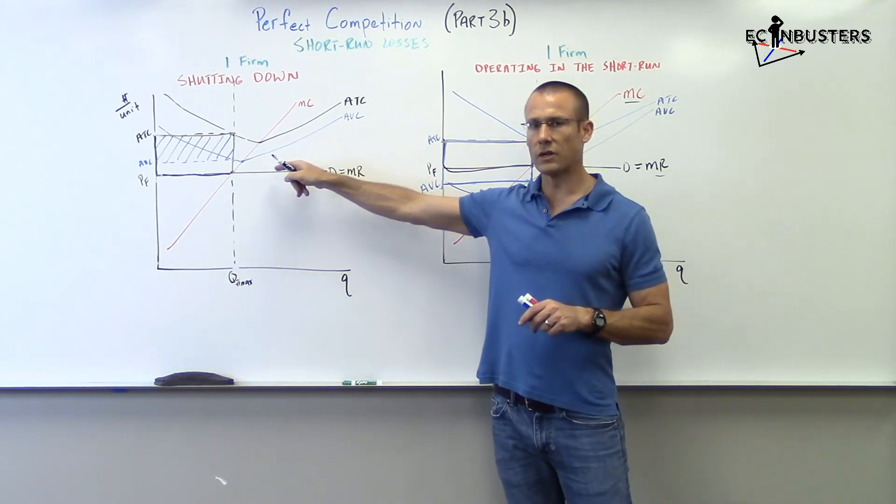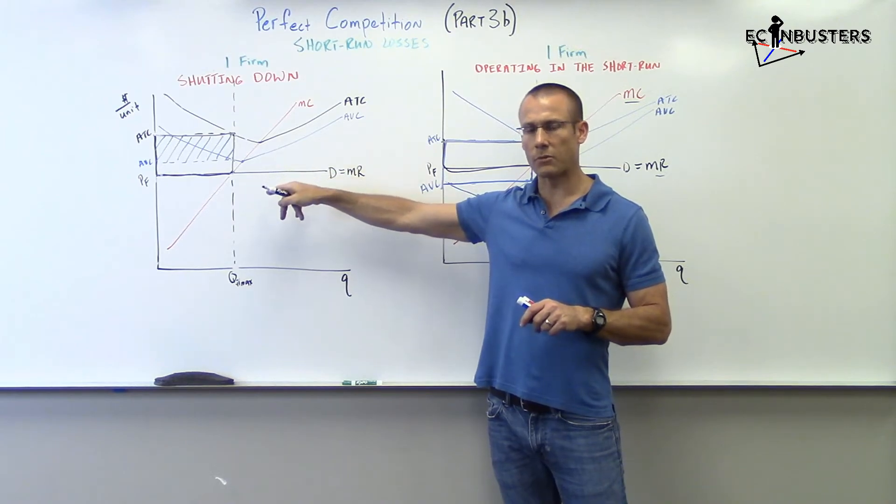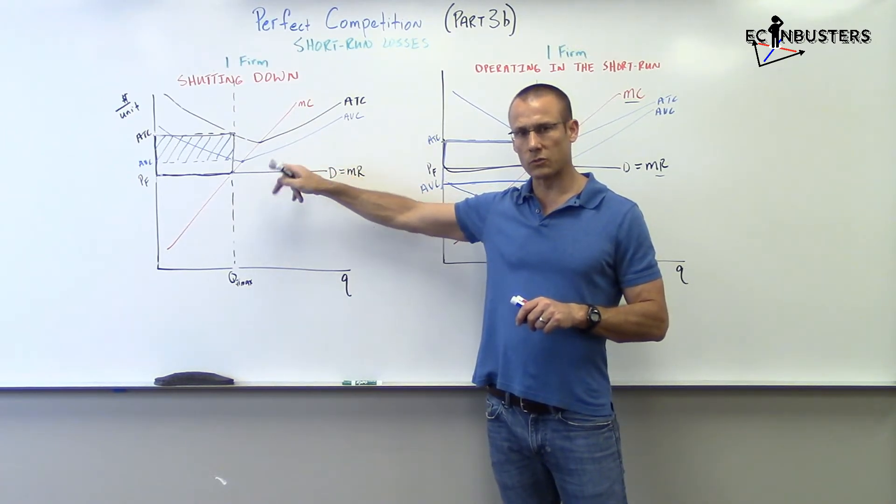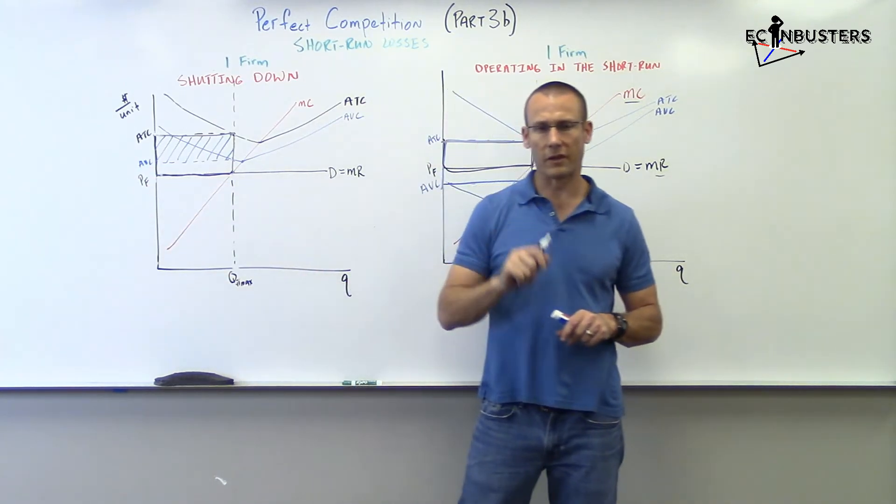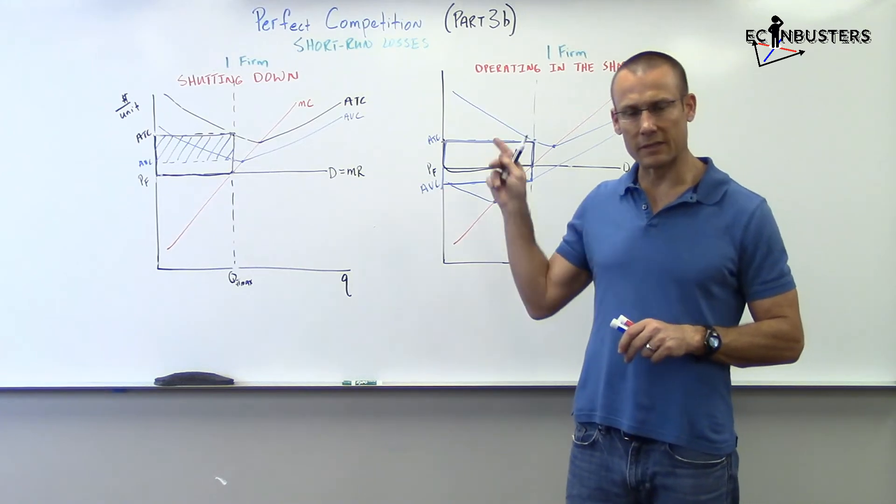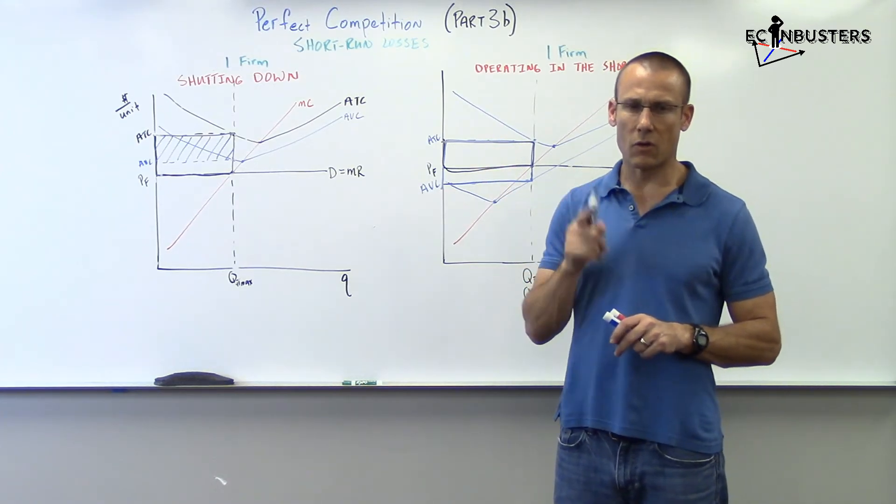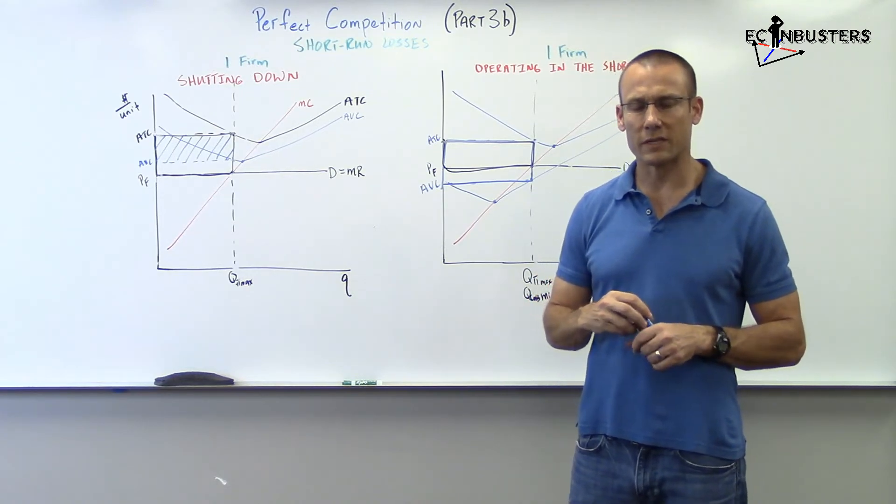In this graph, shut it down. You're better off shutting down. Don't operate. You're just adding more losses when you operate. Why? Price below AVC. Once again, that's a long video, but one worth kind of listening to completely. You get that one down, and you are a long way towards getting Theory of the Firm. Thanks for tuning in. We'll see you in the next video.